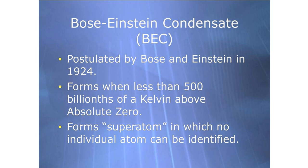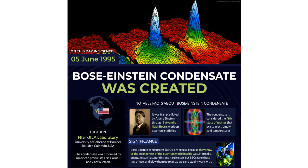Where did this idea come from? In 1924, Indian physicist Satyendranath Bose sent a paper to Einstein about light particles, or photons, behaving in a certain way. Einstein extended Bose's idea and predicted that some atoms, if cooled enough, would all fall into the same quantum state and behave as one entity. But this wasn't just theory — scientists finally created a Bose-Einstein condensate in 1995, 70 years later.